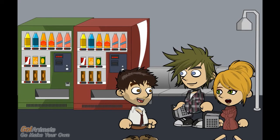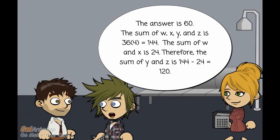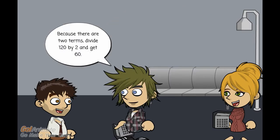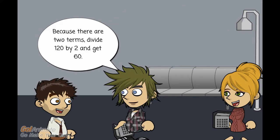When you're done, come back for the answer. The answer is 60. The sum of W, X, Y, and Z is 36 times 4, which is 144. The sum of W and X is 24. The sum of Y and Z is 144 minus 24, which is 120. Because there are two terms, divide 120 by 2 and get 60.